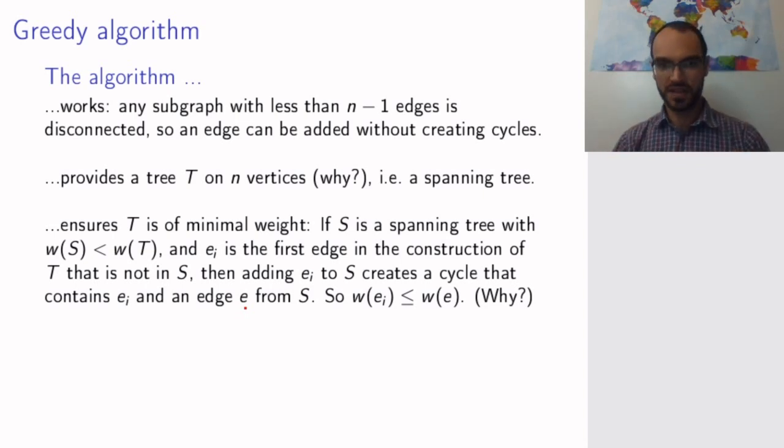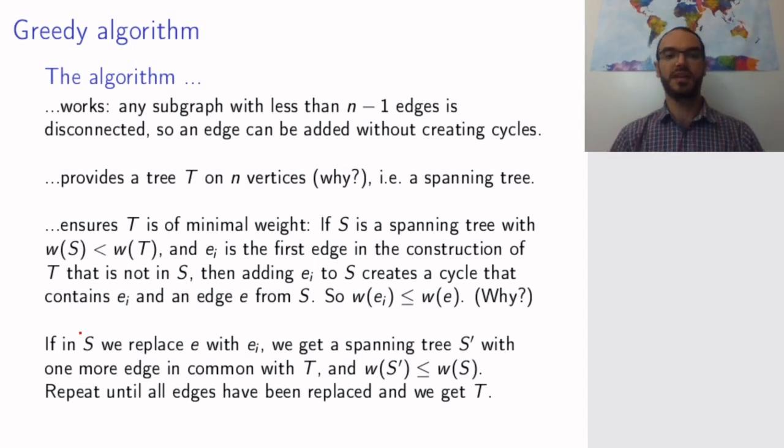The reason is that by construction, at each step, I am adding the edge of smallest weight. So if the edge e that I did not add when I constructed T had had smaller weight than the edge I actually added, then I would be violating my algorithm. Because I could have added both edges without creating a cycle, because I had multiple components. So that's why I know that since I have followed my algorithm, the weight of ei is not bigger than the weight of e. So now I do the following. In this tree S that supposedly has smaller total weight, I remove the edge e and I add the edge ei. I replace the edge e with ei.